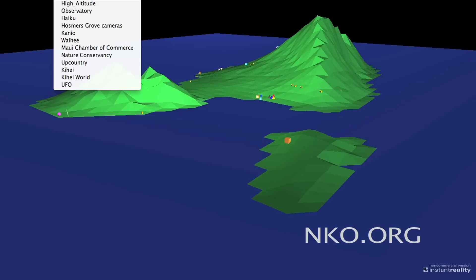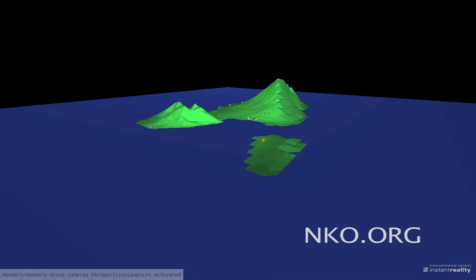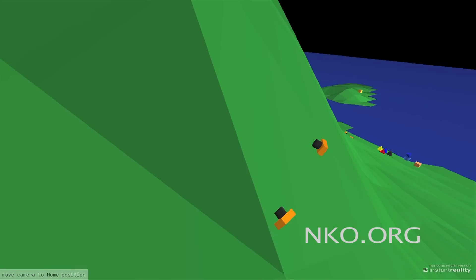You can see we have a number of camera viewpoints here. This is a bird's eye view. We can also take a look from Hosmer's Grove cameras, and as you see, we're moving in this three-dimensional world.